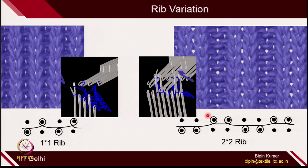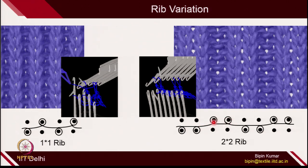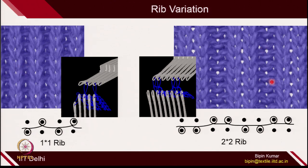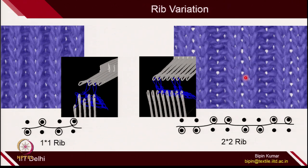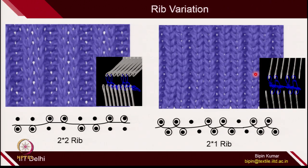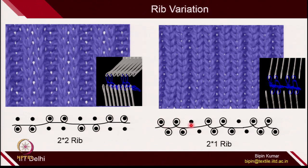The reason is that in 2×2 rib, 2 loops are together, so the holes become bigger. You can also go from 2×2 rib to 2×1 rib. In 2×1 rib, you need to be careful — it indicates that on both the beds, 2 loops are being made and 1 needle is not acting. So on the front bed: 2 are acting, 1 is resting, again 2 acting, 1 resting. Similarly on the back bed: 2 acting, 1 resting, 2 acting, 1 resting.